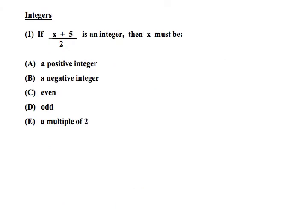Let's look at some examples of how the SAT tests these concepts. You may want to pause the screen and work on them yourself before we go through the explanation. So if you want to, you can pause it now. If x plus 5 over 2 is an integer, then x must be. Must means always.